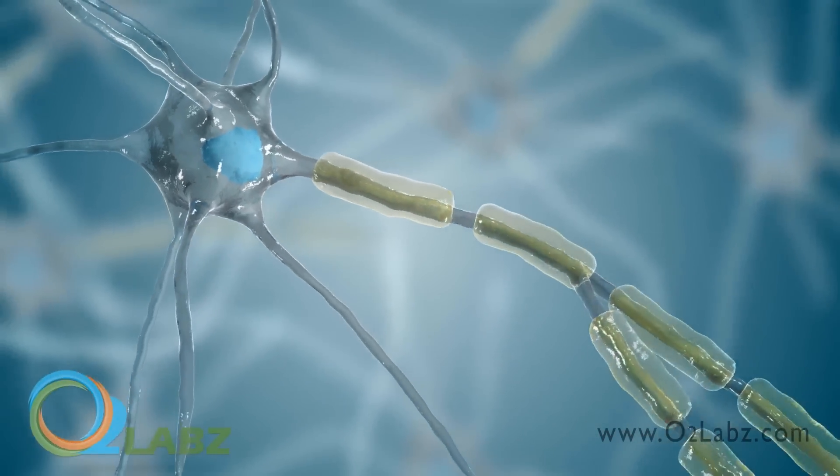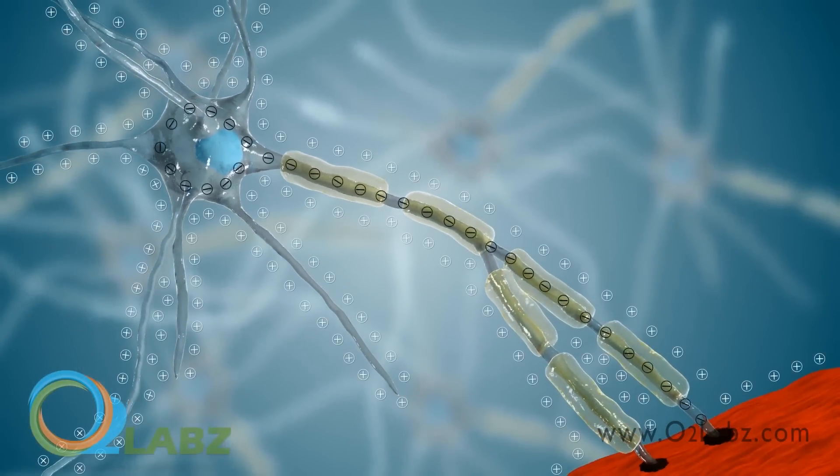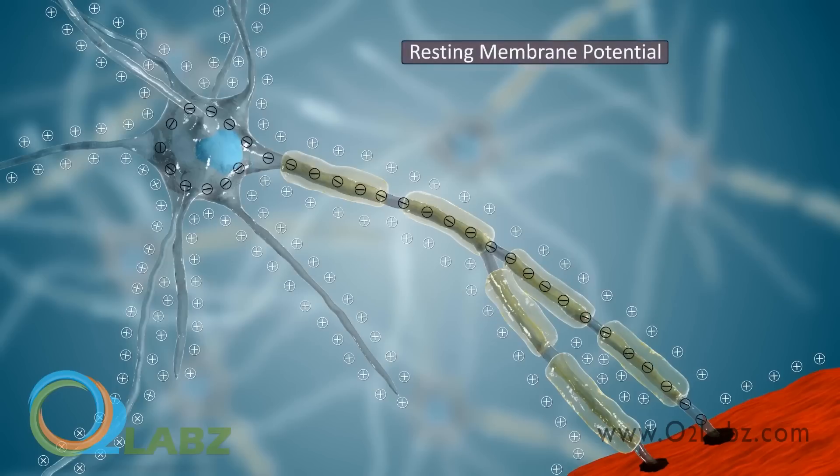Since the inactive cell membrane is negatively charged inside and positively charged outside, it is considered to be polarized. The voltage created by this distribution of ions is known as its resting membrane potential and is maintained everywhere on the cell membrane. The excitable cell remains in this state until it receives a stimulus.